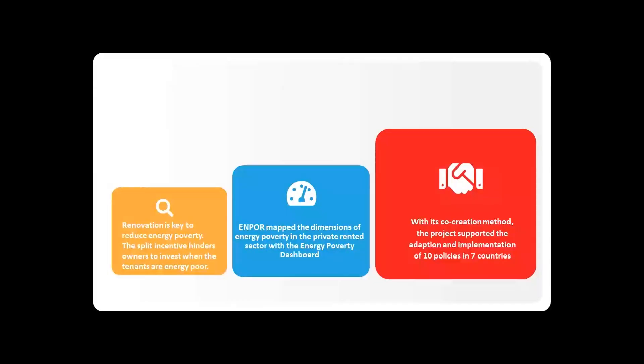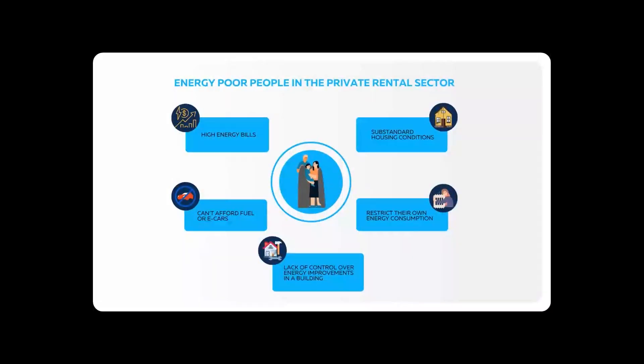The co-creation method was the primary way to further develop the different measures and it supported the implementation of 10 different measures in seven different countries. When we designed them, when we started the co-creation process, the first thing we did, and in general, that is how you should start as well if you opt for this methodology, is to learn about your target group. And our target group were the energy poor households in this sector who were facing various challenges. And these were also the primary ways to identify them for us.